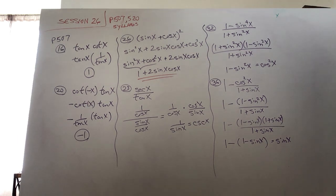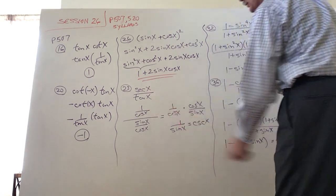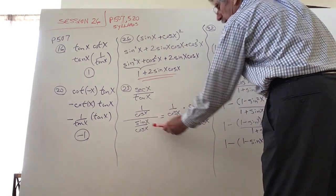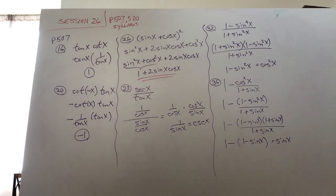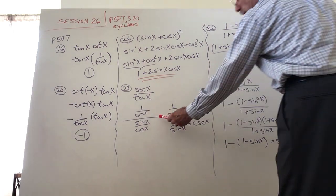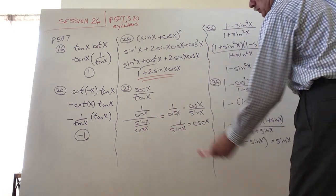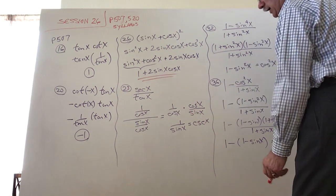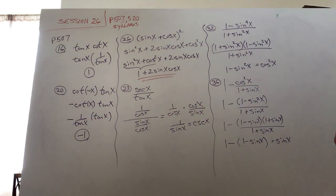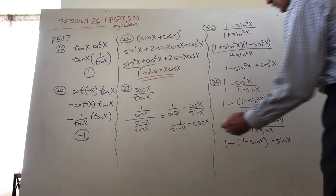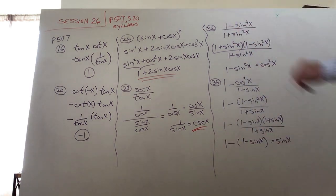There's no direct relationship between secant and tangent, so when you get something like this it's best to revert to sine and cosine. Secant is 1/cos and tan is sin/cos. The large division bar means multiply by the reciprocal, so 1/cos times cos/sin. The cos values cancel, leaving 1/sin, which becomes cosecant x — so we simplified sec x / tan x to cosecant x.